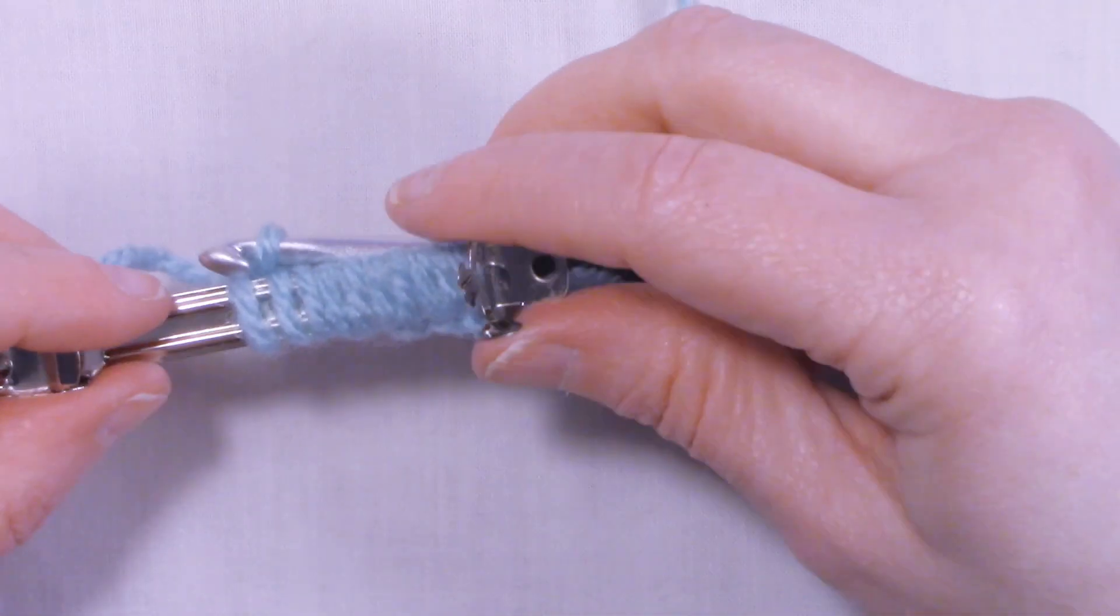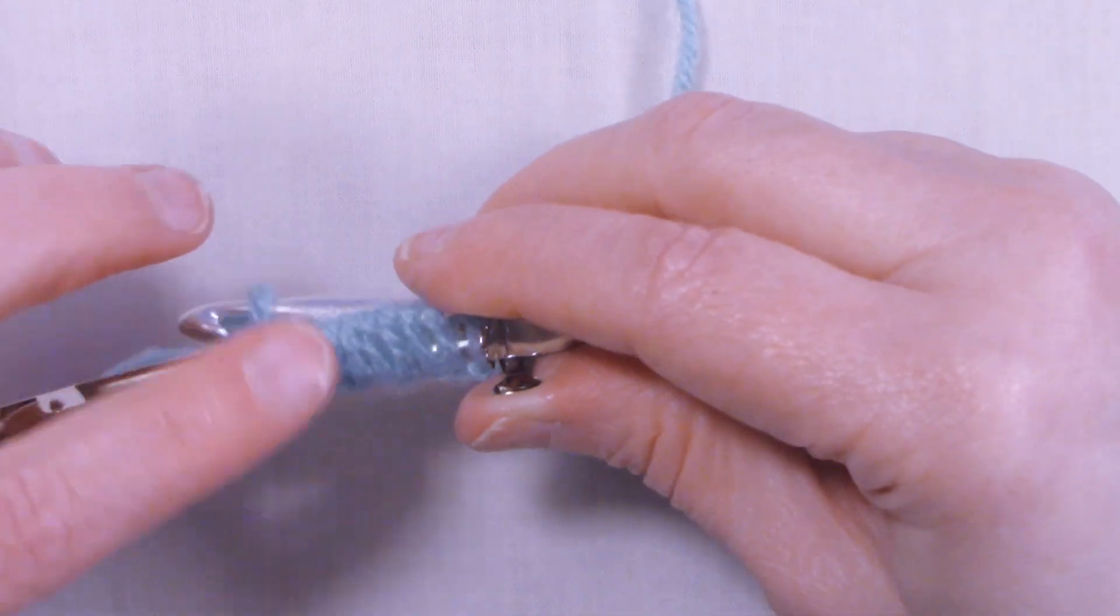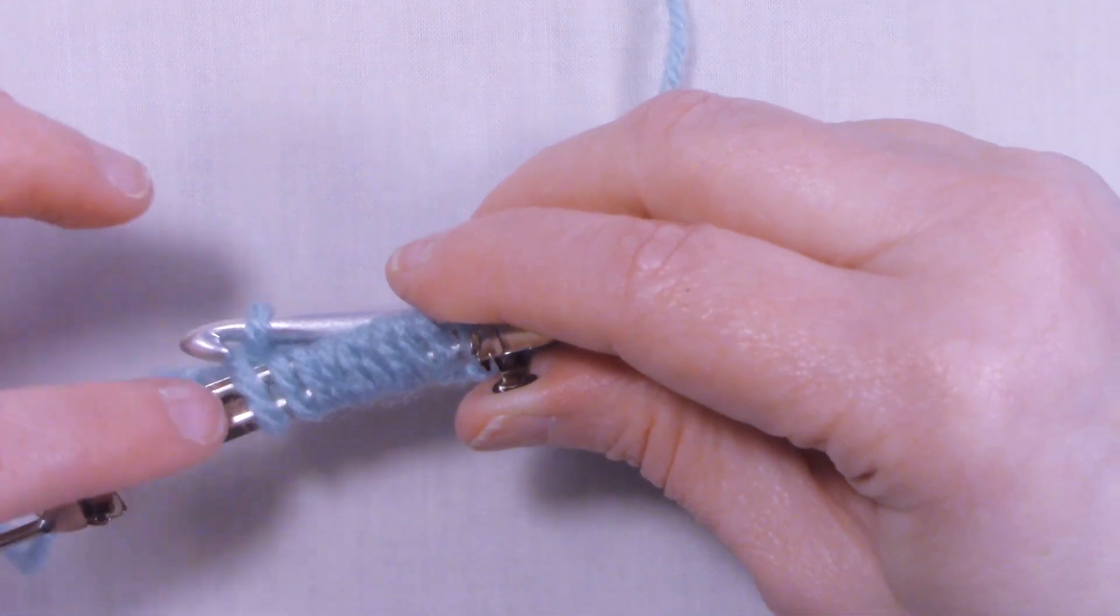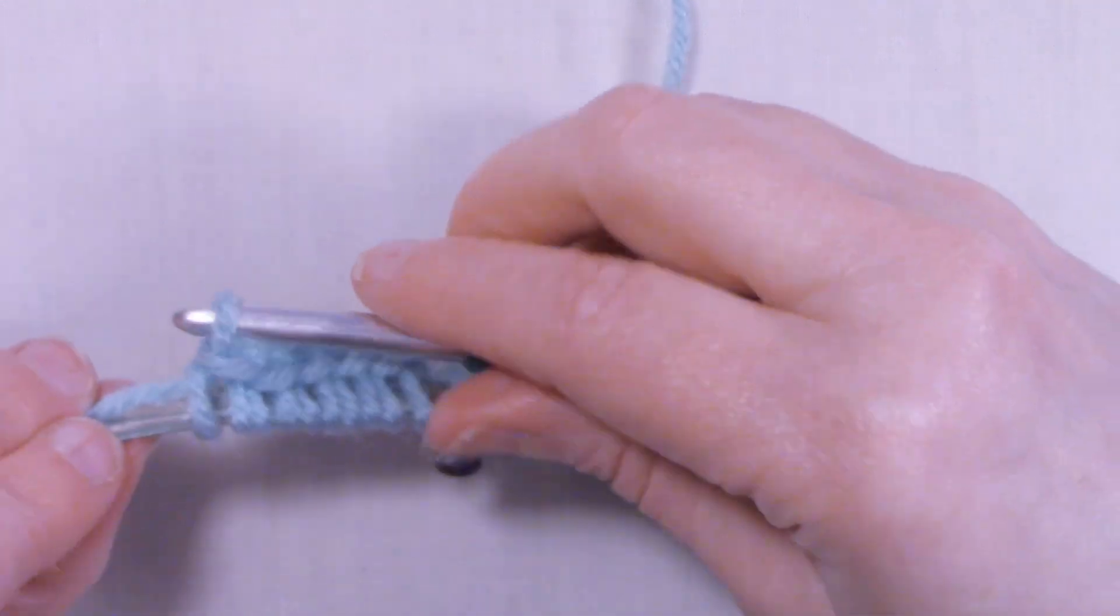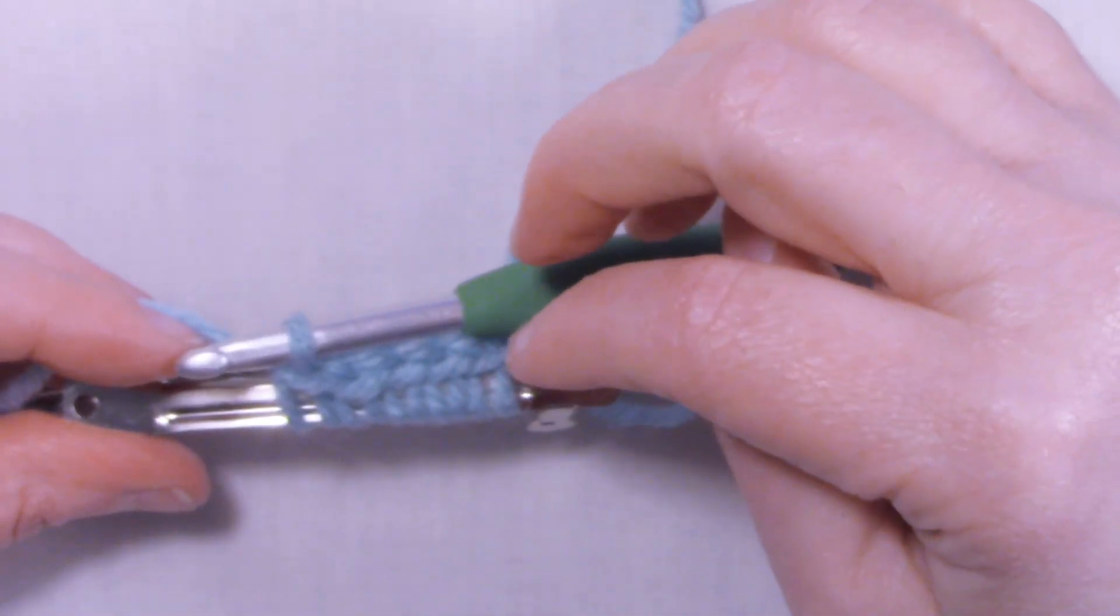Just keep placing single crochets around the base of the barrette until you have it all filled up. Be careful not to put too many on there so that you can still put your bar back in there, but you also want to have it nice and full at the same time so that it covers the metal of the barrette. Once you get that all covered up, I'll meet back up with you.